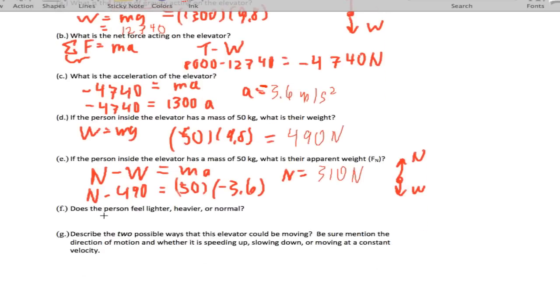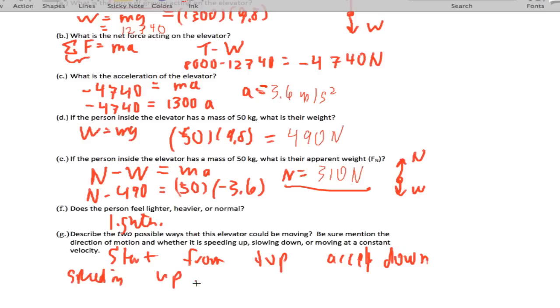Does the person feel heavier, lighter, or normal? The normal force is the apparent weight - what we read on the scale. So they're going to feel lighter. There are two possibilities: we start from the top accelerating down and speeding up, or we approach the top slowing down to rest. I'll let you figure out why based on your notes.